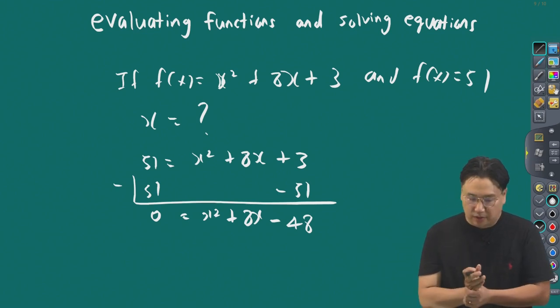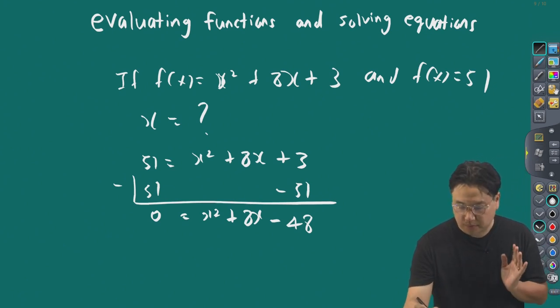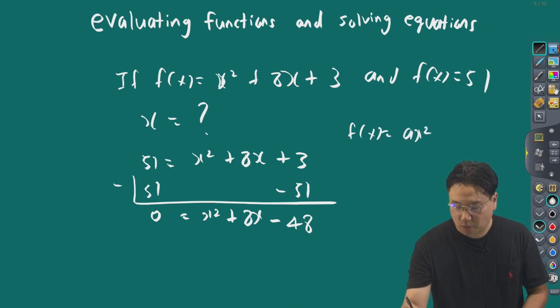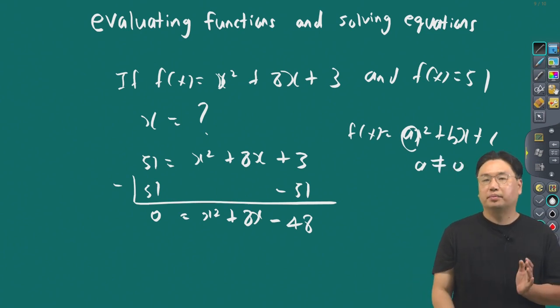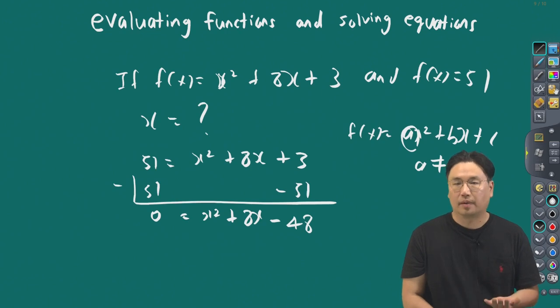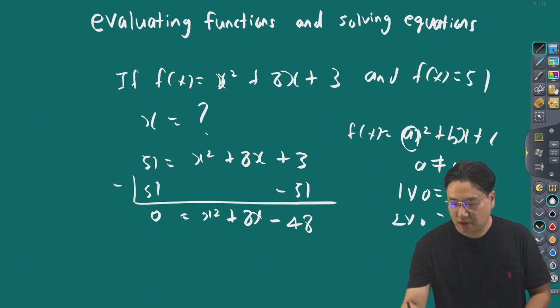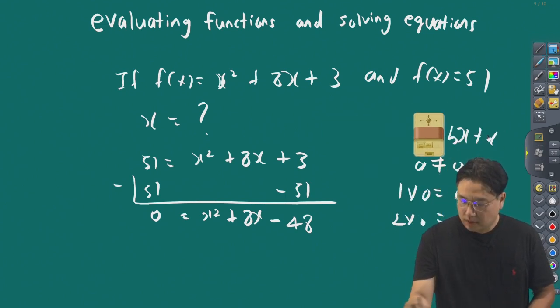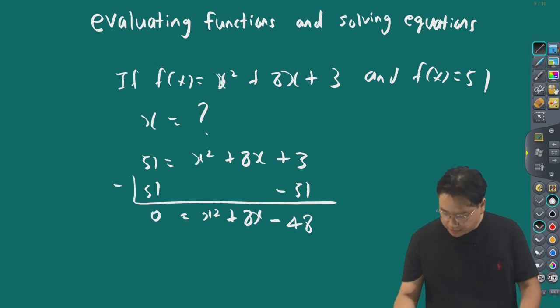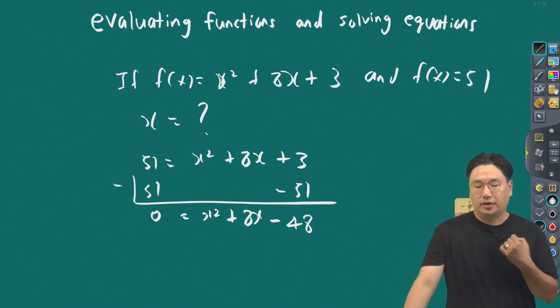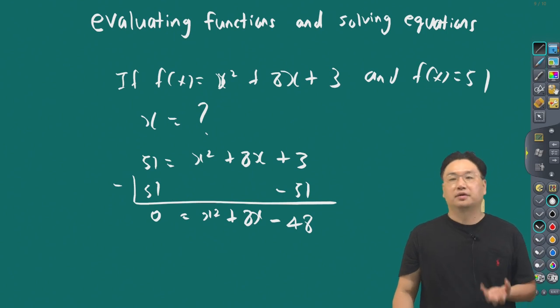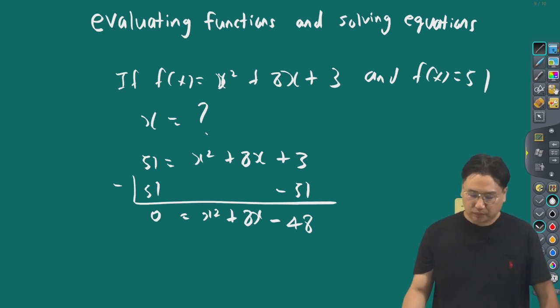The form is ax squared plus bx plus c, where a must not be 0. If you multiply anything by 0, it equals 0—1 times 0 equals 0, 2 times 0 equals 0. So a must not be 0. This is a polynomial expression with three terms, which is called a trinomial. In order to find x, we can factor it.